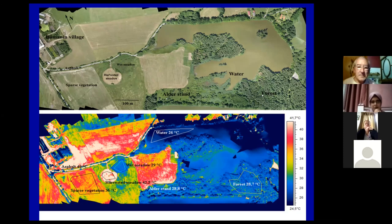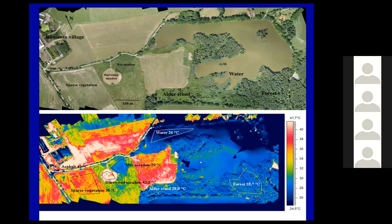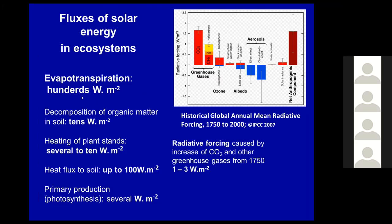Here is a picture we made with an airplane — now you can do it with a drone. There is our landscape; it's a one-kilometer distance. You see 100 meters here: harvested meadow, water, forest. The temperature map shows surface temperatures — there is sunshine: 26 degrees for water, 28 degrees in forest, but asphalt has 49 degrees and harvested meadow 42 degrees. The message is that there are big differences in surface temperature depending on land cover. Water cools because it evaporates.